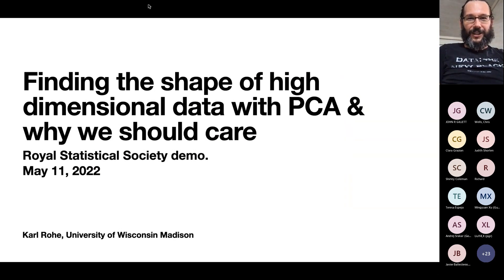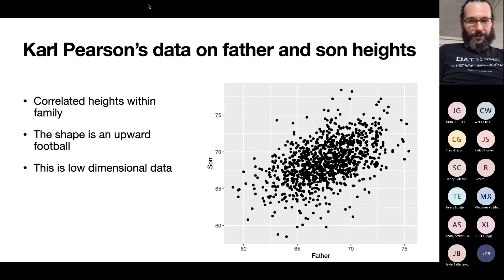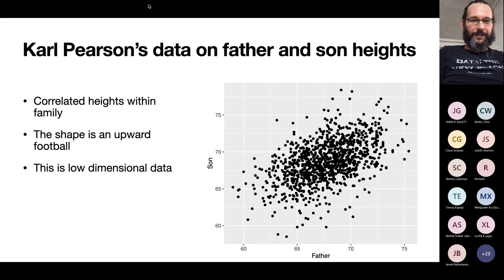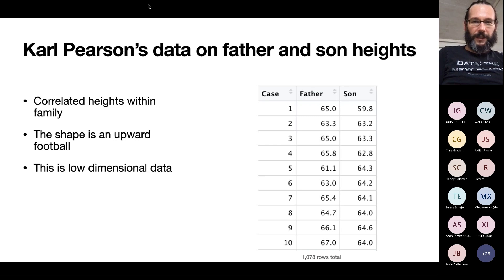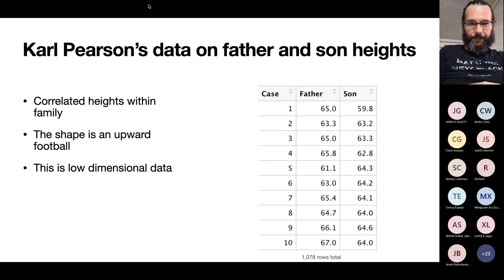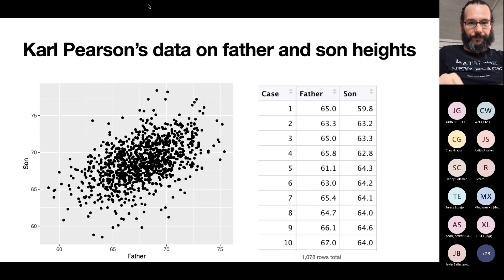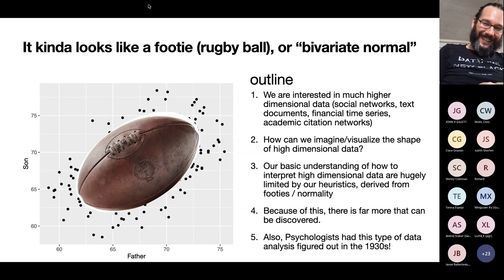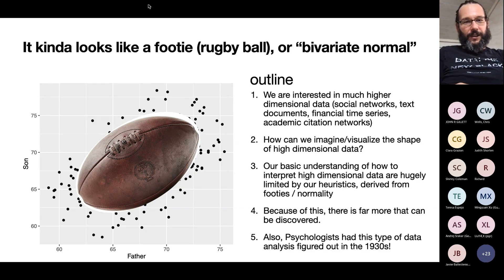The title of this demo is 'Finding the Shape of High Dimensional Data with PCA and Why We Should Care.' A long time ago — about a hundred years ago — Carl Pearson showed that fathers' and sons' heights were correlated. People started imagining data shaped like this: it's only two-dimensional data, each dot has a father height and a son height, and it looks like a football — what we'd call a football. In this talk, we're interested in much higher dimensional data.